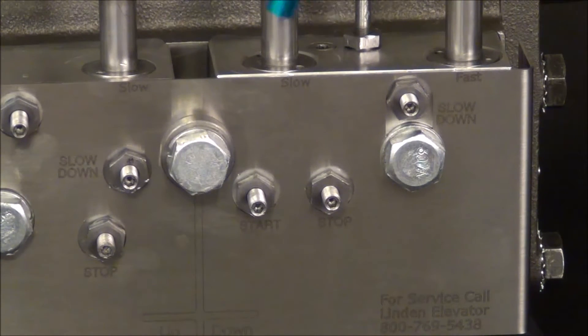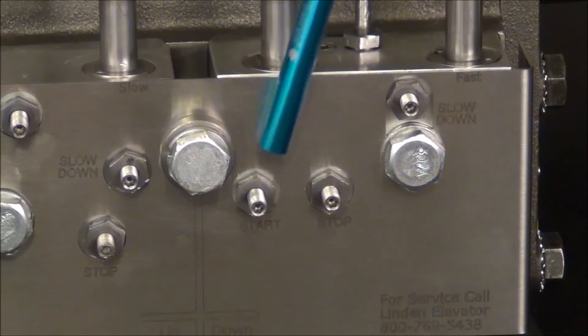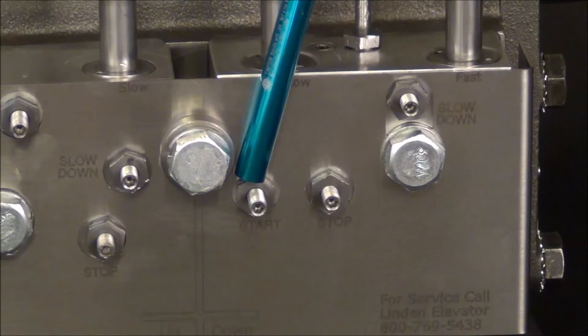We have the slow speed solenoid here, the fast speed solenoid here. We have the start adjuster, which is in for smoother, out for firmer.